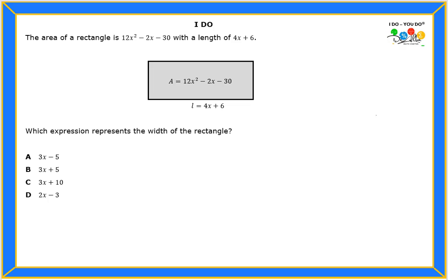So we're looking for the width. It's going to be an expression, which means it's not going to be like a 3, 4, 5, like a number. They're giving us the area for the rectangle, which is right here, and they're also giving us the length.